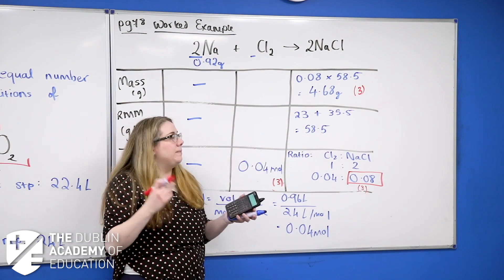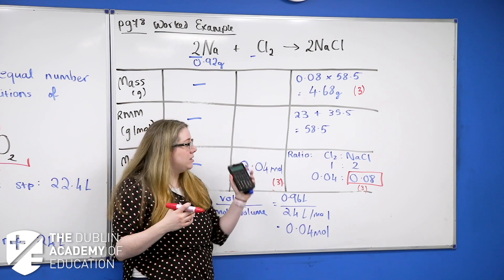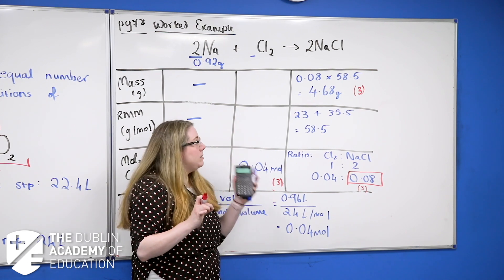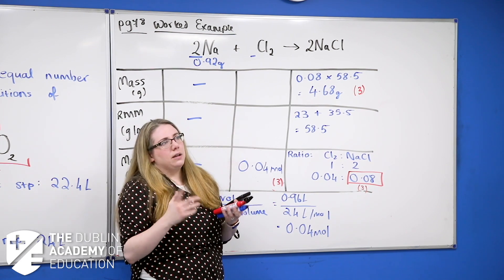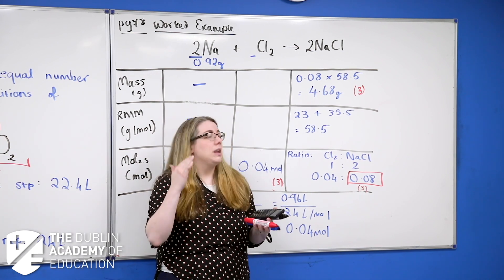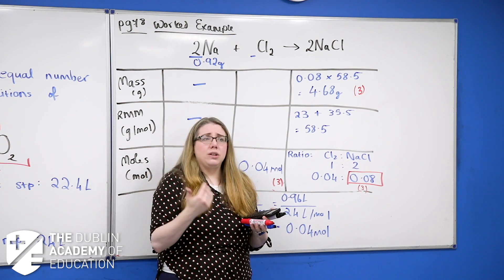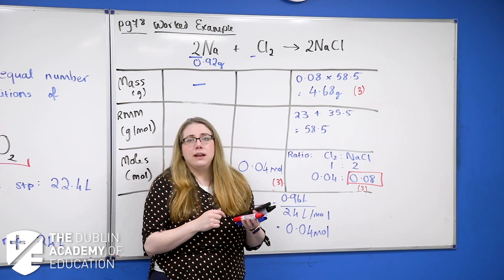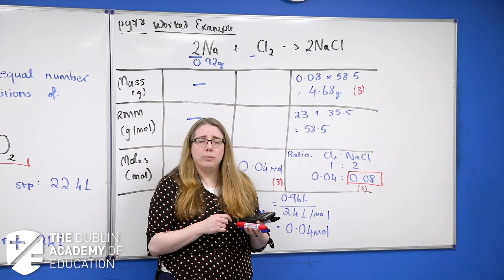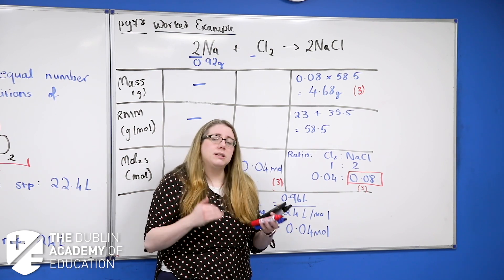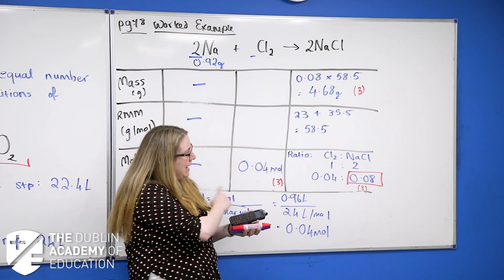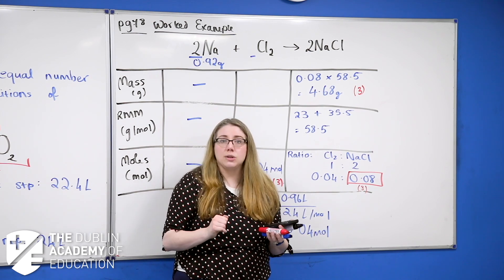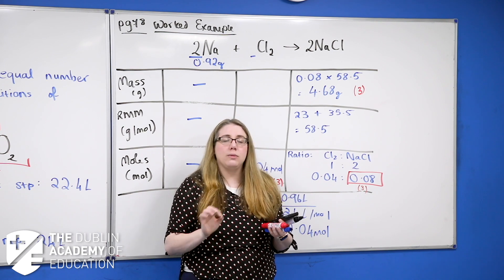The volume and molar volume topic ties in really nicely with other areas. There's always a mole question in question 10 or 11 for 25 marks. They'll give you a reaction, you'll probably have to work out the mass of a product or find the limiting reagent. If one of those substances is a gas, they will ask about the volume at STP or RTP — it's a handy extra 3 marks and it can come up anywhere there is a gaseous substance, not just in a dedicated gas laws question.